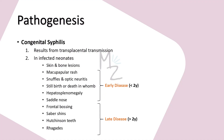Congenital syphilis results from transplacental transmission, either in utero during gestation or during birth through the vagina. The baby may be stillborn. Early signs include maculopapular rash on palms and soles, optic neuritis, snuffles — nasal blockage due to increased secretions containing spirochetes — and organ damage causing hepatosplenomegaly. Late stage congenital syphilis, occurring after two years of birth, includes saddle nose from bony nasal destruction, saber shins where the tibia bone is bent, Hutchinson's teeth with notches, mulberry molars, frontal bossing, rhagades, and hearing loss.